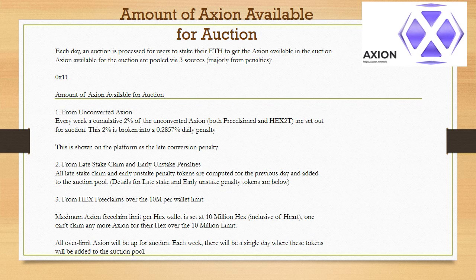Amount of Axion available for auction: each day, an auction is processed for users to stake their ETH to get the Axion available in the auction. Axion available for the auction is pooled via three sources. Source 1: from unconverted Axion — every week, a cumulative 2% of the unconverted Axion, both free claimed and Hex2T, is set out for auction. This 2% is broken into a 0.2857% daily penalty, shown on the platform as the late conversion penalty. Source 2: from late stake claim and early unstake penalties — all such penalty tokens are computed for the previous day and added to the auction pool.